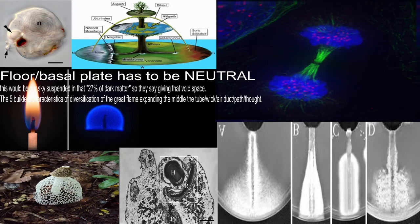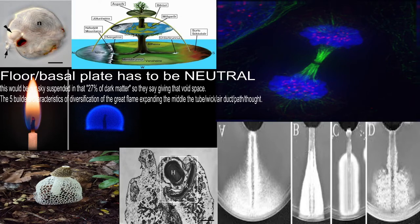It contains primarily motor neurons. The alar plate, another part of the brain, is primarily connected with sensory functions. Cell types of the basal plate include lower motor neurons and four types of interneurons. The left and right sides of the basal plate are continuous during neurulation; they separate by the floor plate, and this process is directed by the notochord.